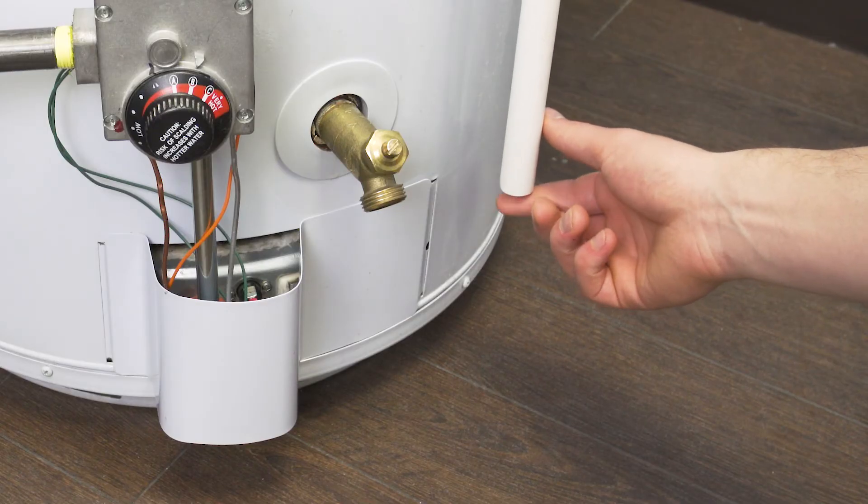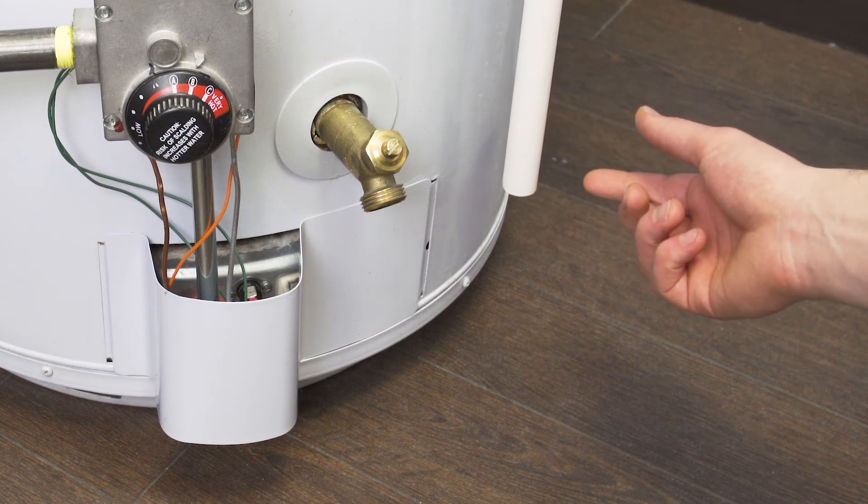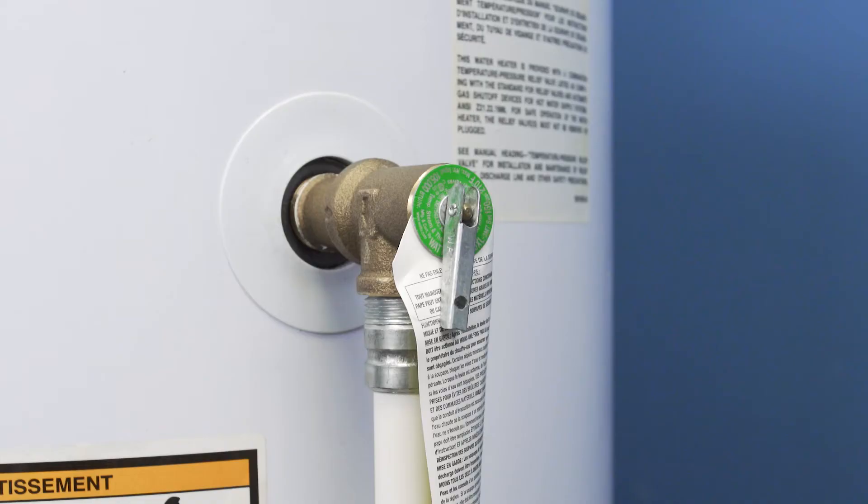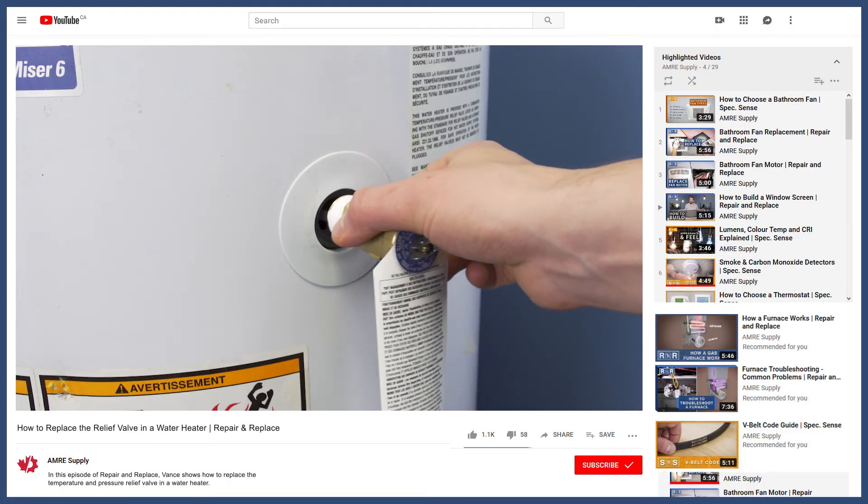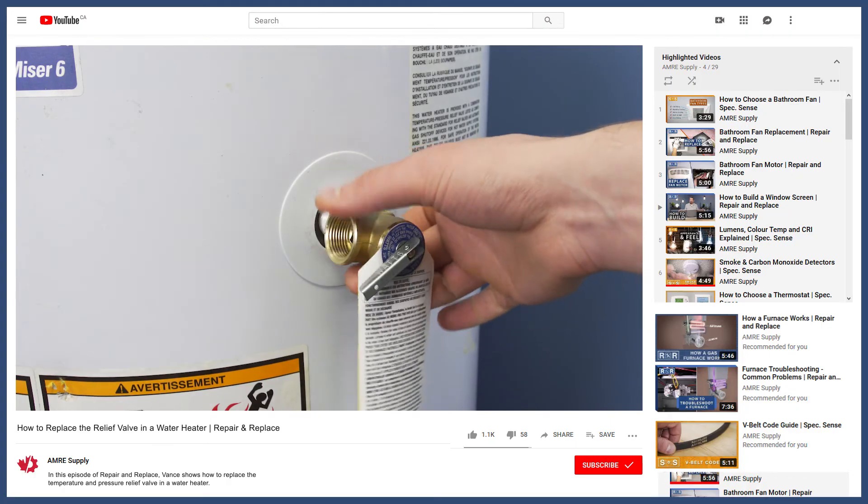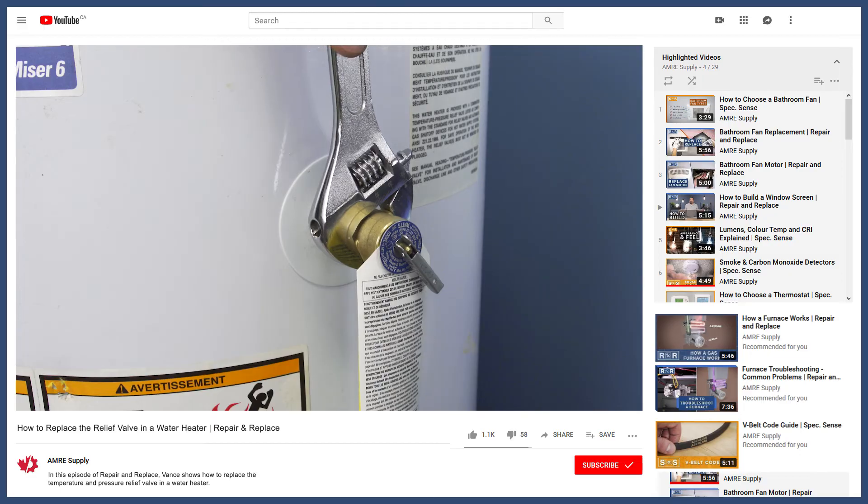On the other hand, if there is a slow continuous leak, then it's possible that the valve is not closing properly. You can see how to replace the pressure and temperature relief valve in the video linked below.